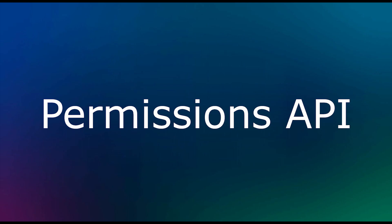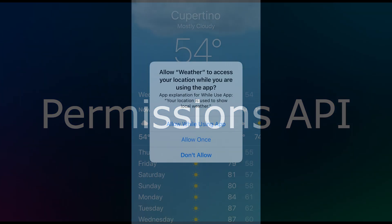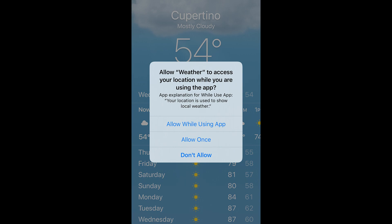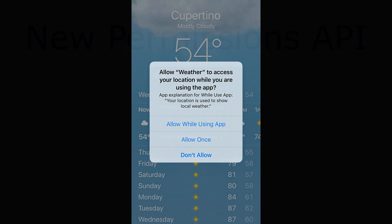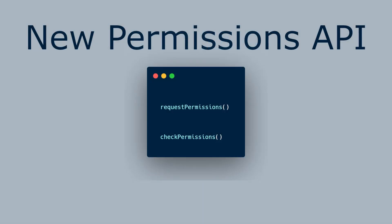Another big addition to Capacitor 3 is the brand new cross-platform permissions API. Plugins that require permissions will now offer the requestPermissions and checkPermissions methods, which give app developers fine-grained control over which permissions are requested and when. It also gives app developers the ability to query the state of permissions for a given plugin. This is possible by grouping sets of permissions into aliases, which are maintained by each plugin.